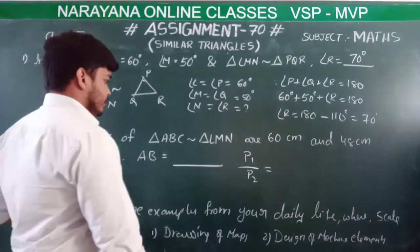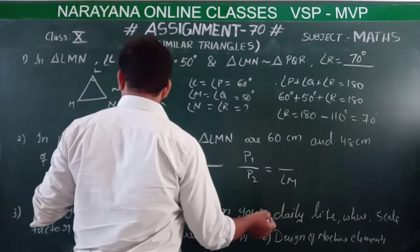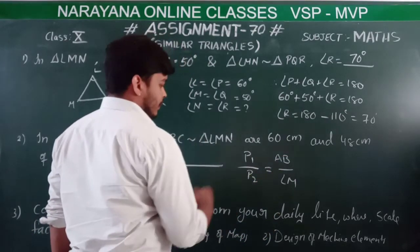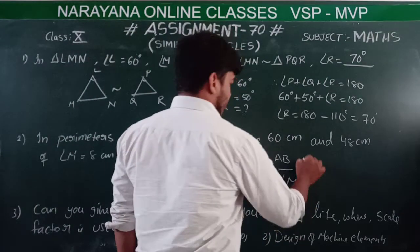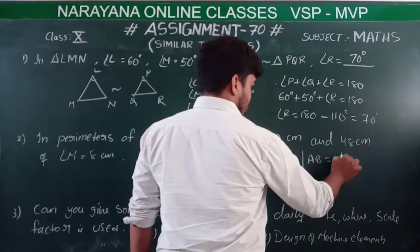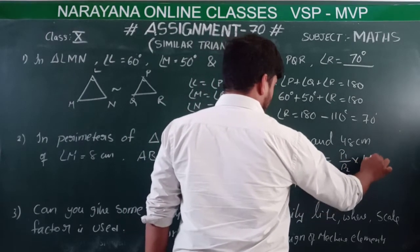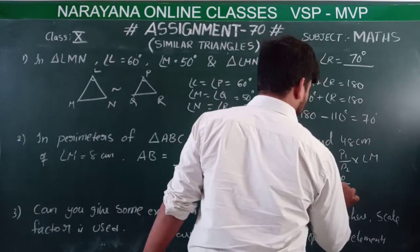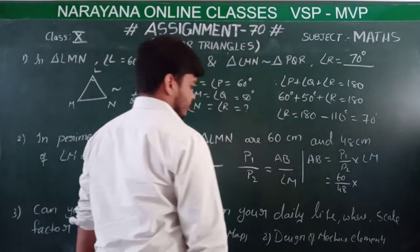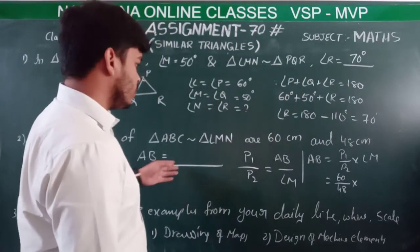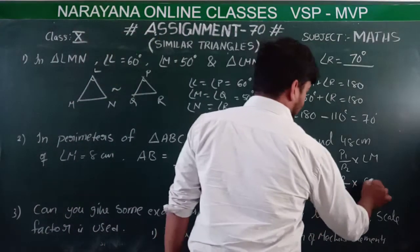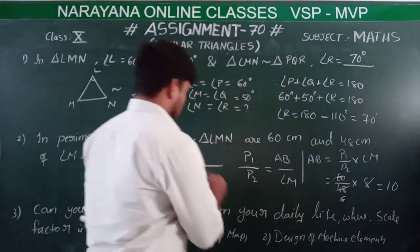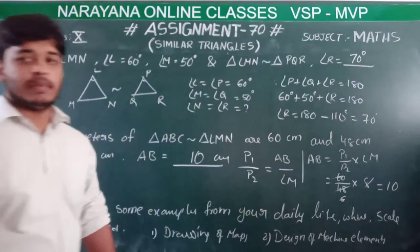So P1 by P2 is equal to LM by AB. We need to calculate AB. AB is equal to P1 by P2 into LM. So AB equals 60 by 48 into 8, which gives AB equals 10 centimetres.